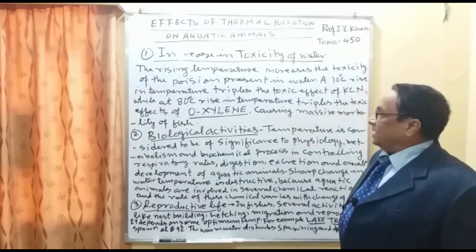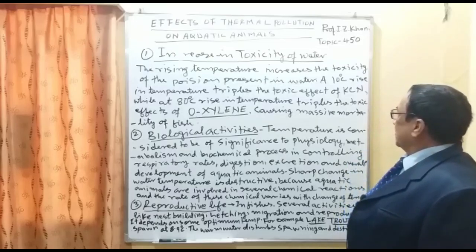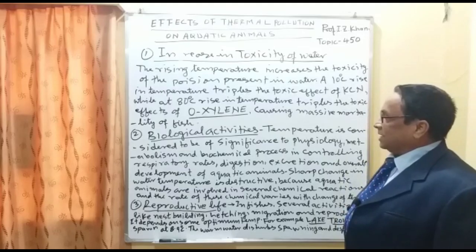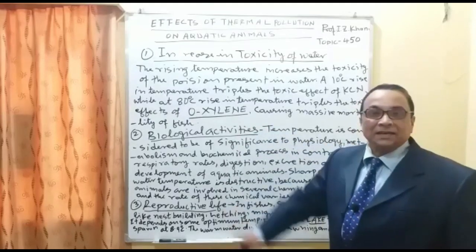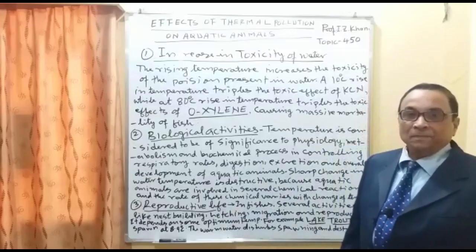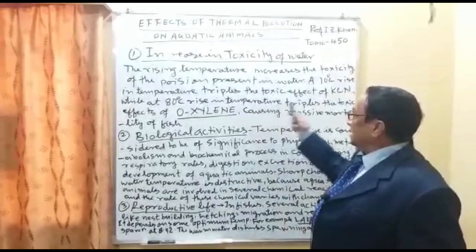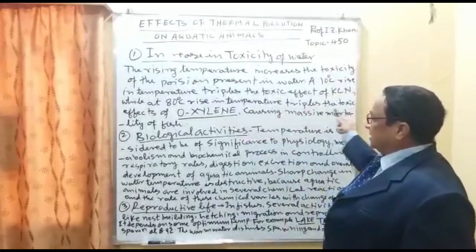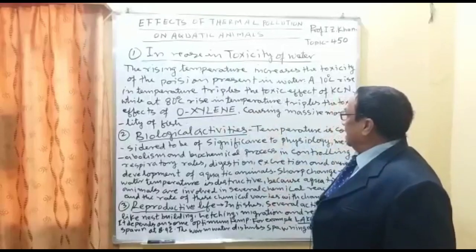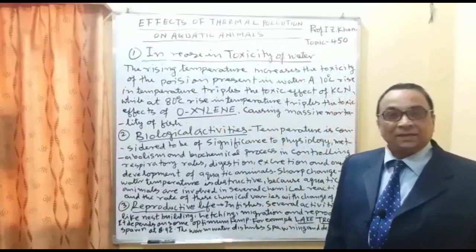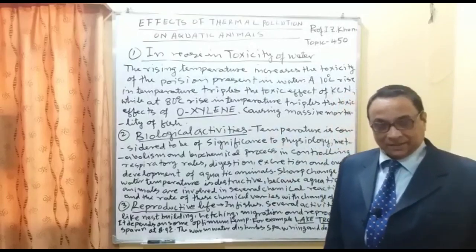At an 80 degree centigrade rise in temperature, the toxic effect of ortho-xylene, an organic compound, increases significantly. This causes massive mortality of fish in rivers and ponds. That brings us to effect number two: biological activities — meaning physiology, biochemistry, and the reproductive and digestive systems.